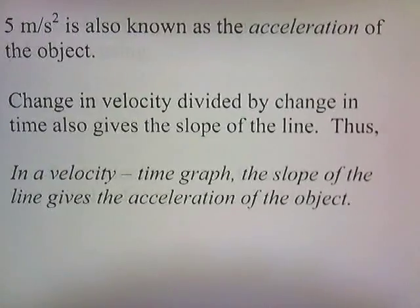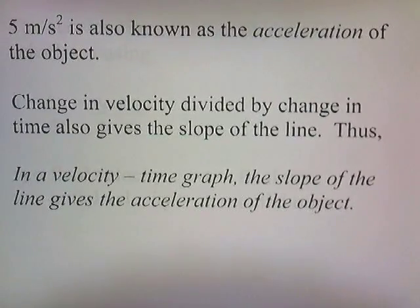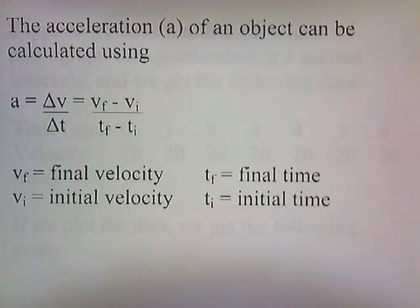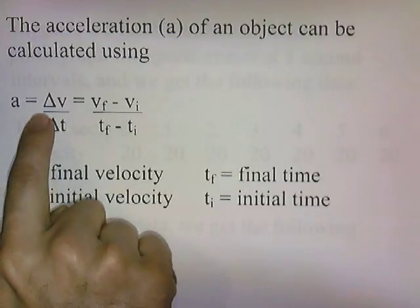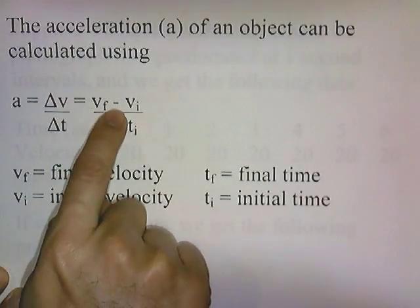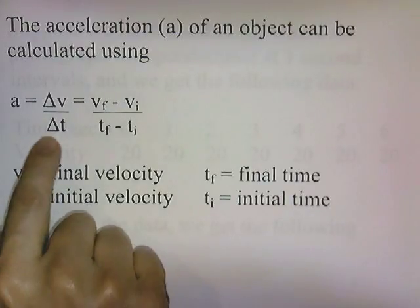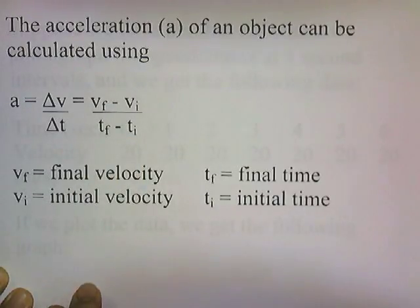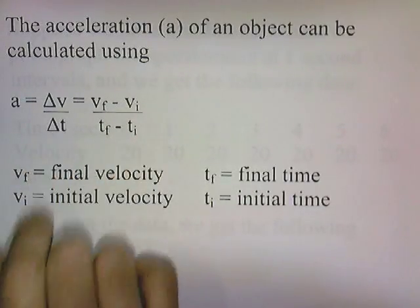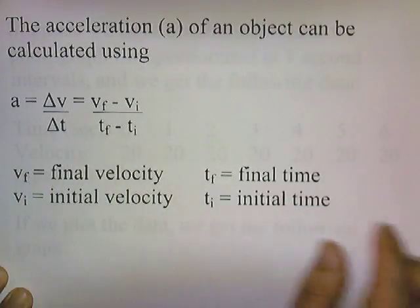Five meters per second squared is also known as the acceleration of the object. Change in velocity divided by change in time also gives the slope of the line. Thus, in a velocity-time graph, the slope of the line gives the acceleration of the object. The acceleration A can be calculated using A equals change in velocity over time: VF minus VI, over TF minus TI. Often they just give us the total change in time, delta T, rather than both TF and TI.